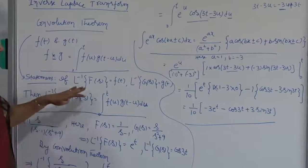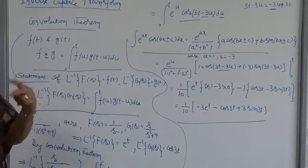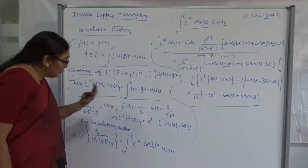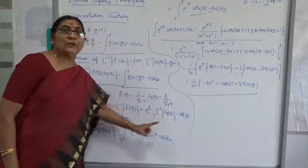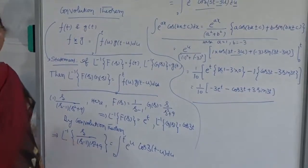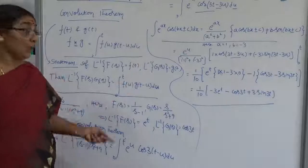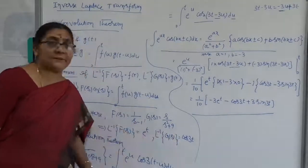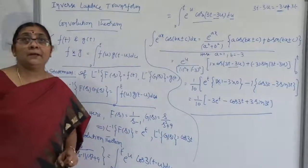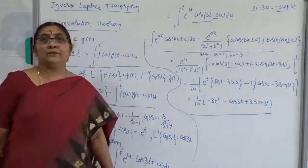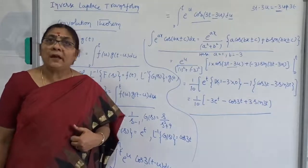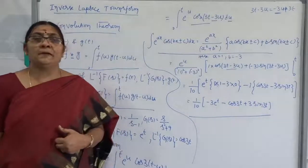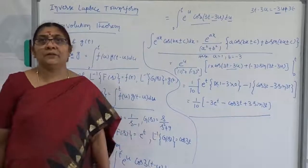To summarize: we use the convolution theorem whenever the given function F(s) can be expressed as a product of 2 functions whose inverse transforms can be found directly. If the problem explicitly states to use the convolution theorem, you must use it. I will solve one more problem using the convolution theorem in my next class. Thank you very much for listening — please press the like button and subscribe to my channel.